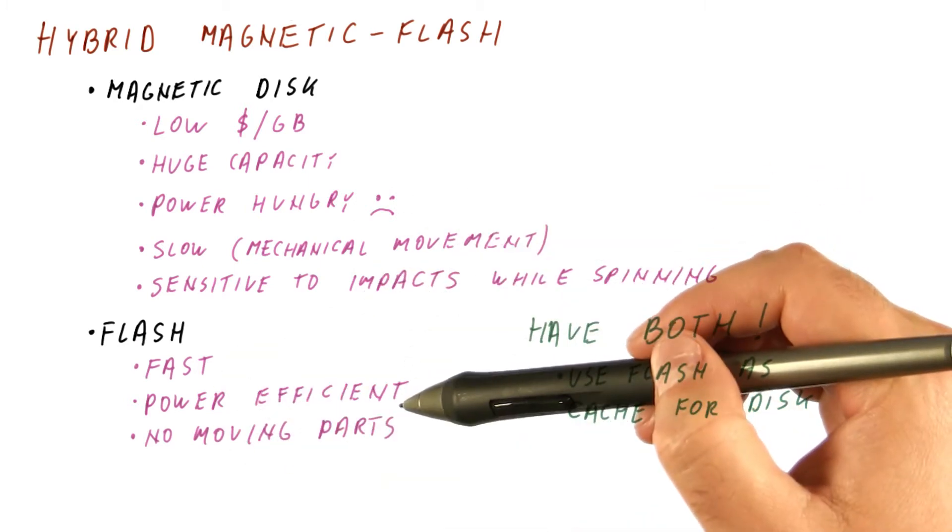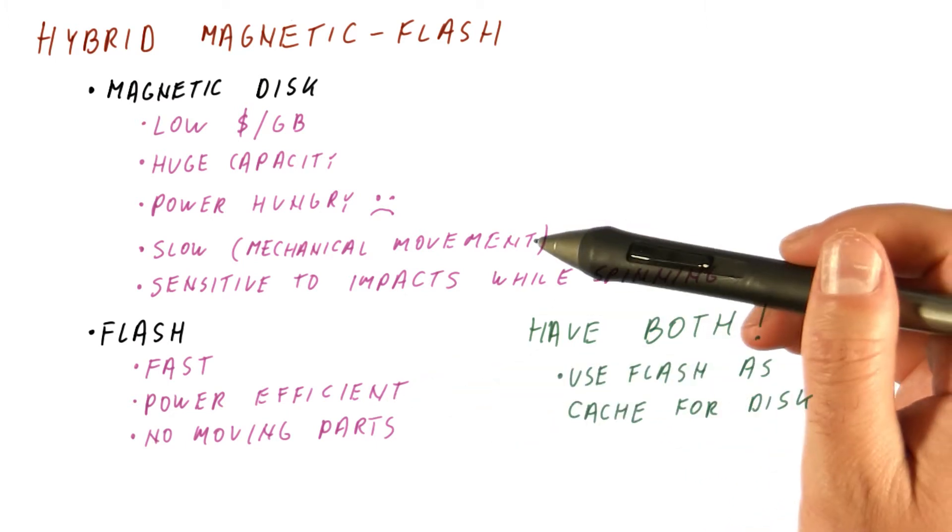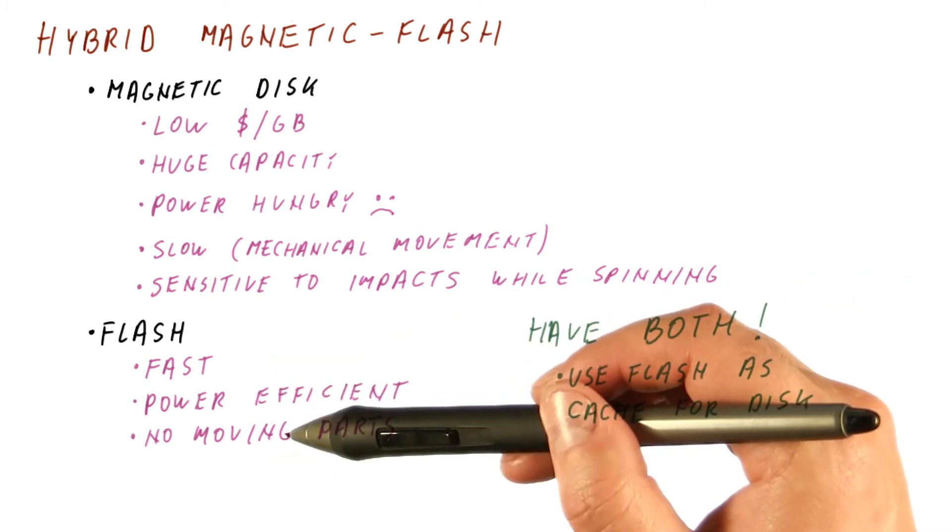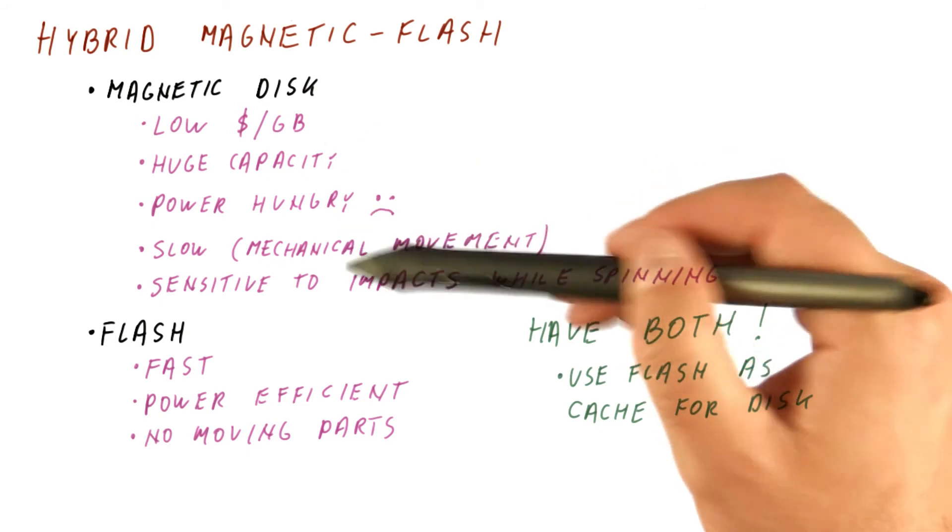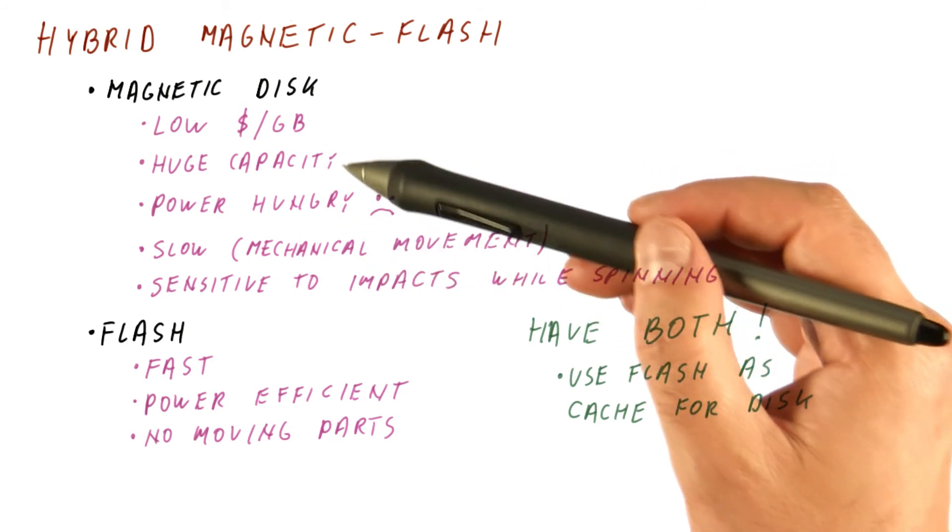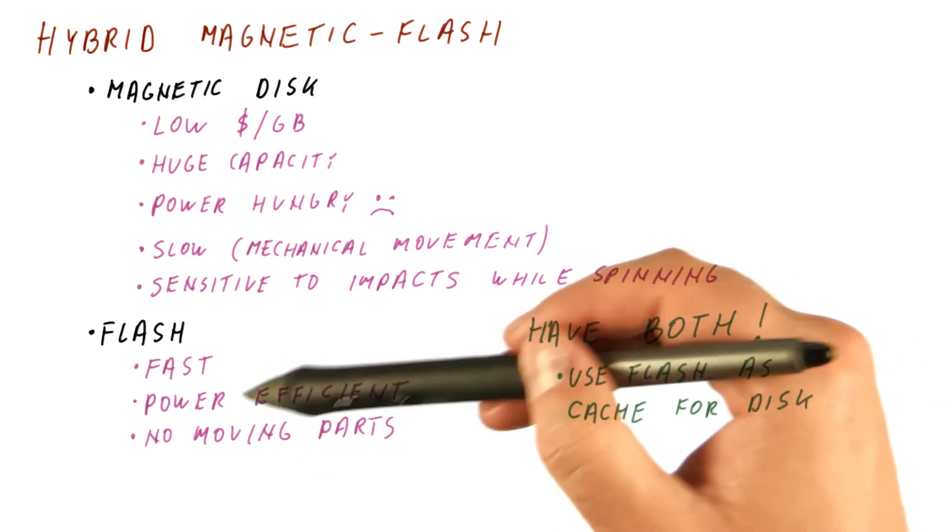Because both of these can keep their data without power, if we turn off power suddenly, the data in the flash will still survive, and so will the data on the disk. Unlike, for example, if we use a magnetic disk with a DRAM cache to keep the most recently accessed data.